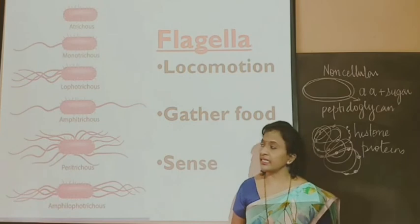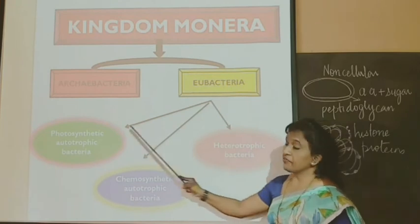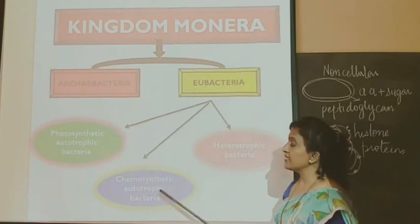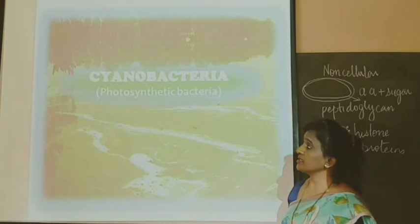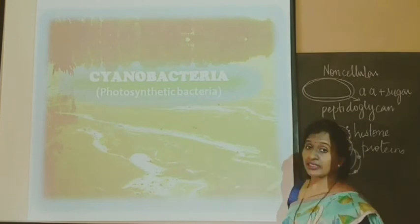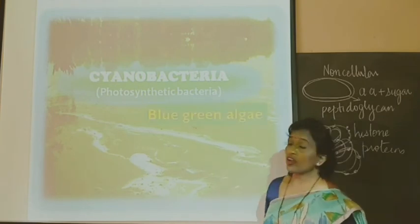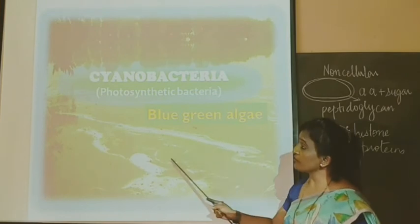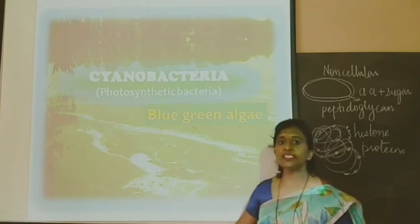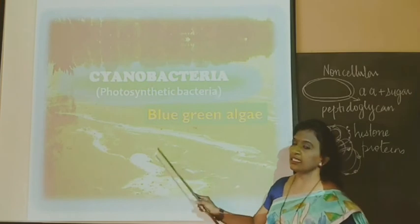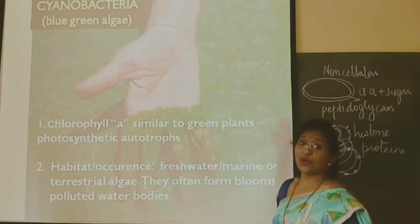Bacteria have some bristle-like structures which are useful for reproduction. The flagella is also a protoplasmic appendage which comes out from the cell wall and is meant for locomotion, also to gather food, and they have sense organs which sense the environment. Flagella can be either single, or in the form of a tuft, or as a group of flagella arising from these organisms, or the whole surface will be surrounded by flagella — it depends on what type of bacteria it is. Eubacteria is divided into three types: photosynthetic, chemosynthetic, and heterotrophic. The first one is photosynthetic autotrophic bacteria, also called cyanobacteria or blue-green algae.